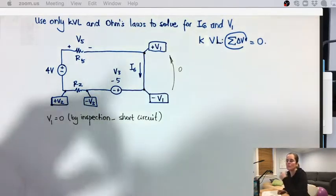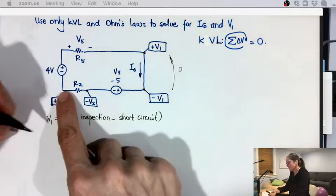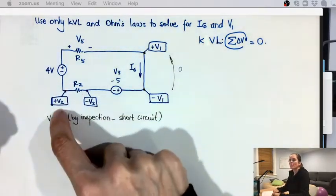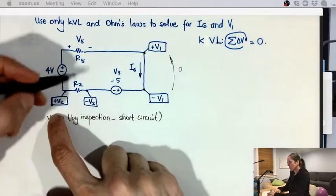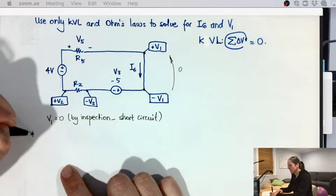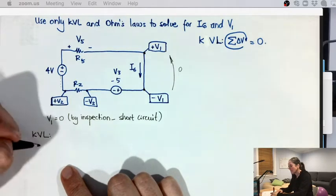So we're going to use Kirchhoff's voltage law, just like what we said today. I'm going to start on this bottom node here, where it shows plus V2. But I'm going to go up here in that direction, and I find a minus. So I'm going to write, KVL is minus four.